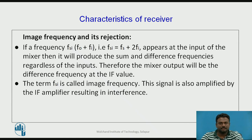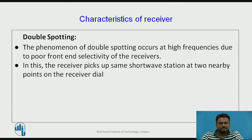Double spotting: the phenomenon of double spotting occurs at high frequencies due to poor front-end selectivity. In this case, the receiver picks up the same shortwave station at two nearby points on the receiver dial.